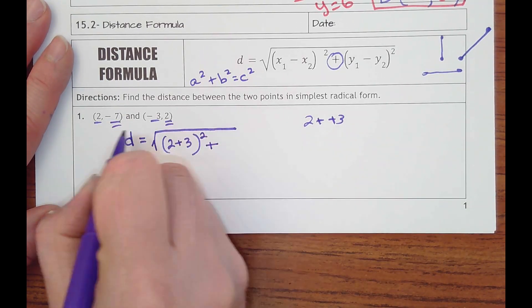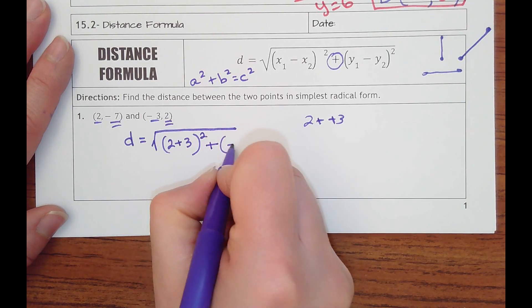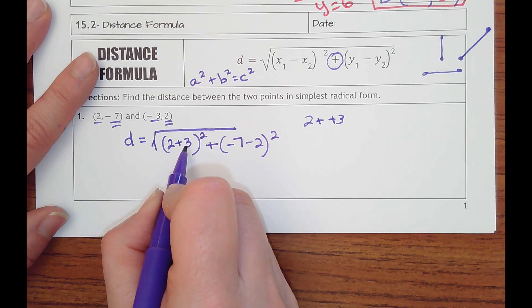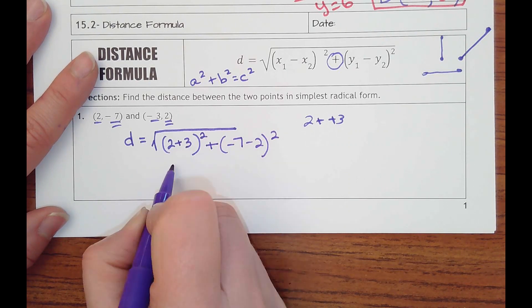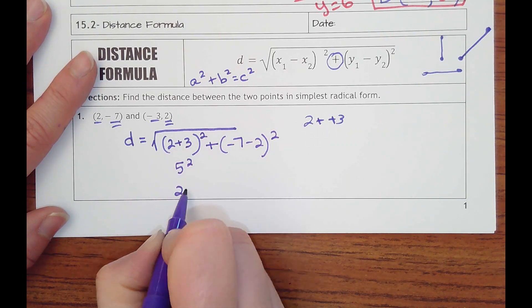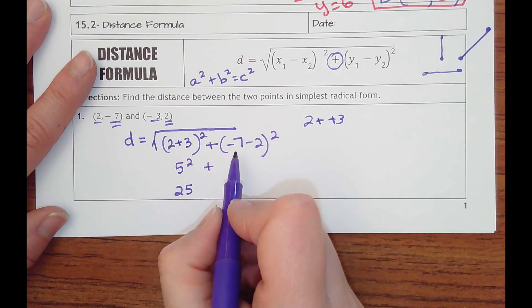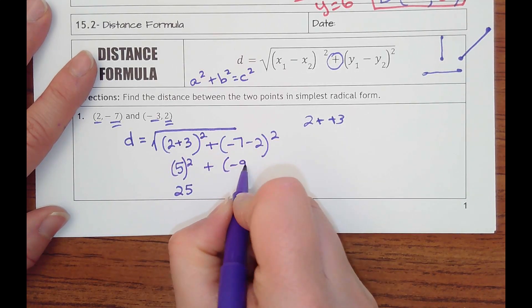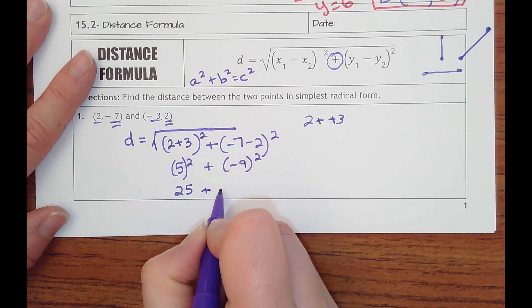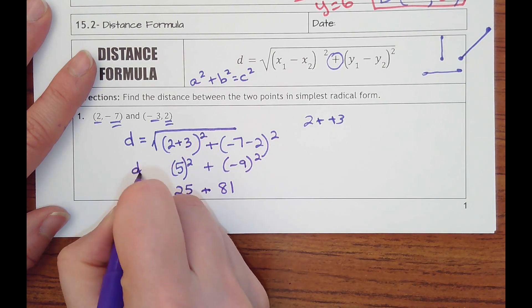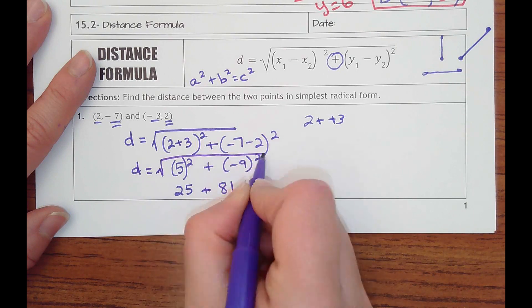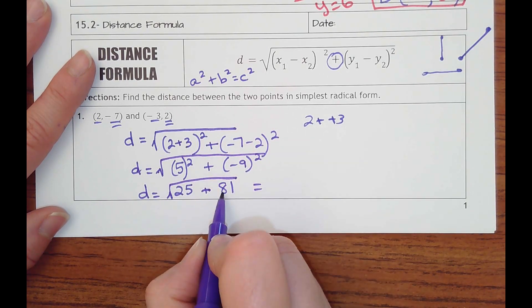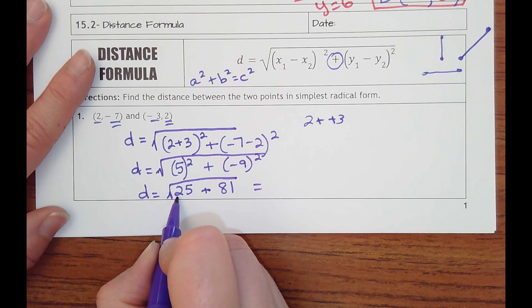And then it'll be negative 7 minus 2 squared. So that would be 2 plus 3 is 5. 5 squared is 25. Negative 7 minus 2 is negative 9, squared is a positive 81. Okay, add those together. You get 106.